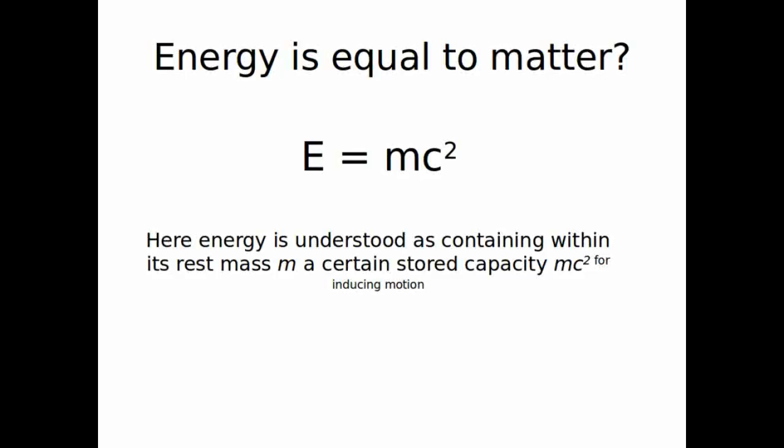An application of this equation involves 4 protons — 4 hydrogen nuclei. When they combine to form one helium nucleus, there is a loss of mass. That missing mass is converted into energy, which is the enormous energy output of the Sun and nuclear reactions.